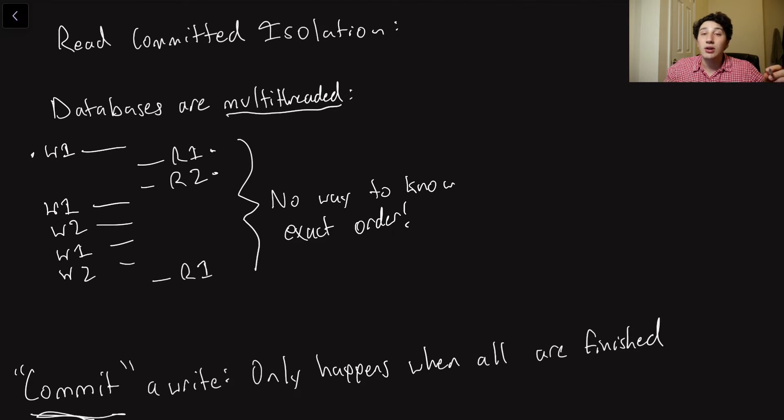For example, if we have a sequence of writes, I'm writing in one row and then I'm writing in a second row, those two writes are only committed when both of them are successful.